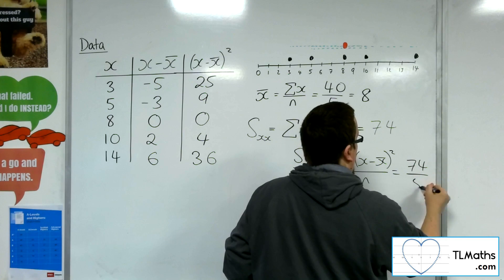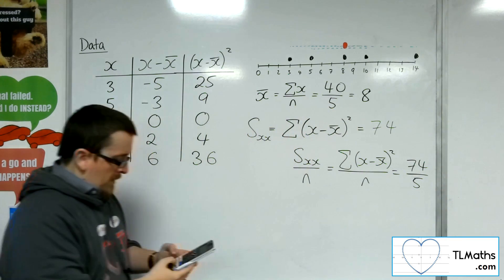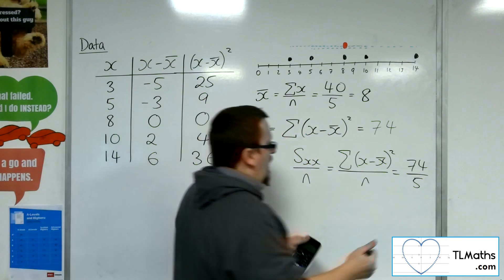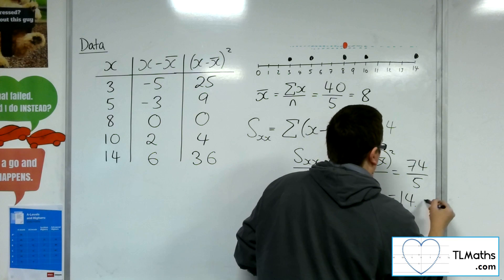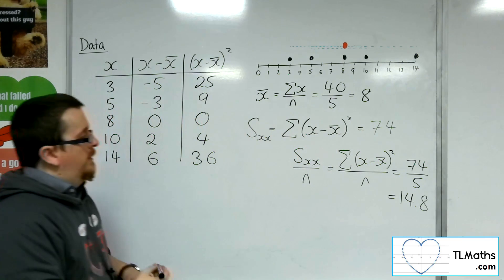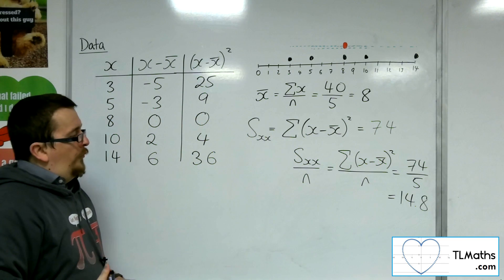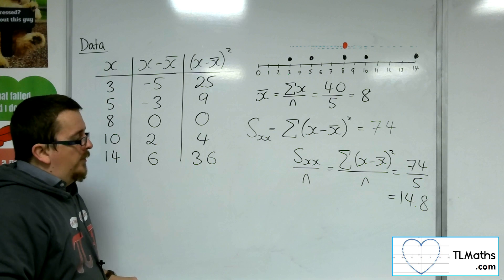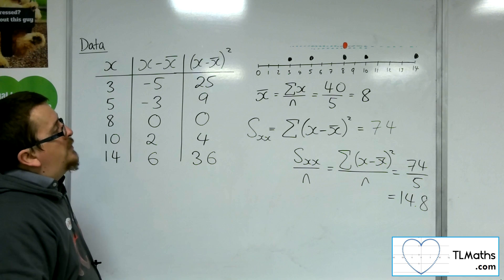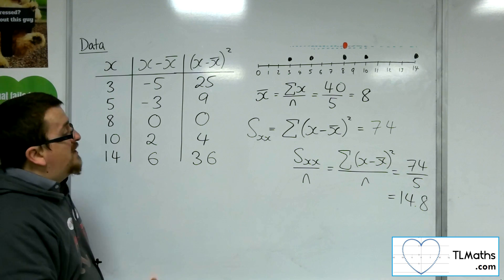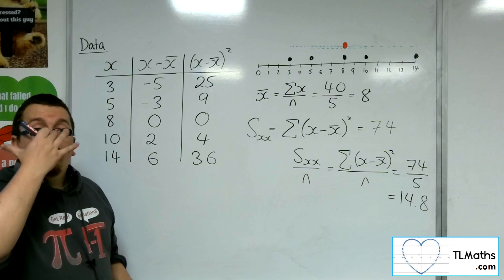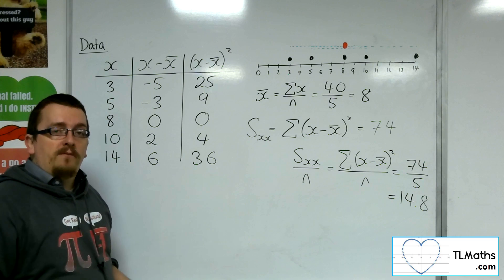So if I divide this by n, this is the sum of the x minus x̄ squared, divided by n. And so that would be 74 divided by 5. And that gets me 14.8. So is that done now?